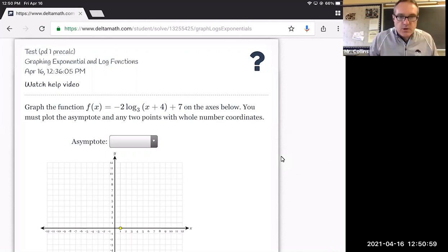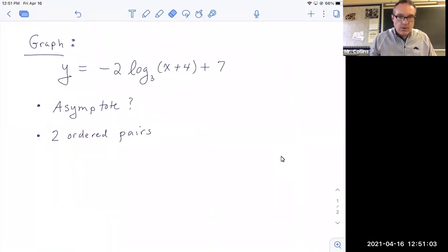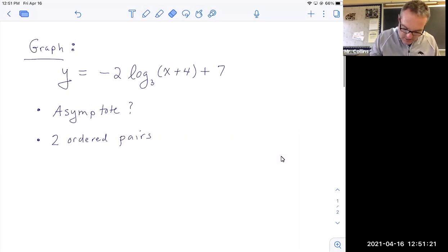So this is something you really should do on paper first, and I'm going to transition to Notability here so you can see the work that I think you should be doing on paper. Now, the first thing is, on DeltaMath, they ask you, there's a drop down menu for asymptote, and basically the options are vertical and horizontal. This is a log function. Every log has a vertical asymptote. So you would choose the vertical option.